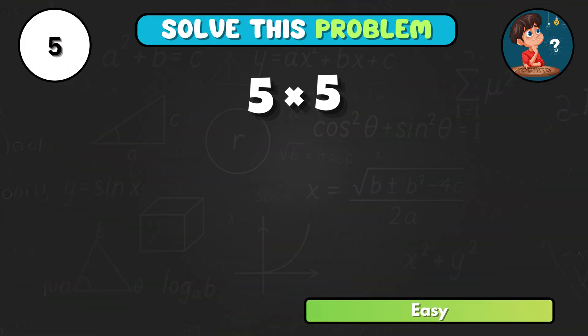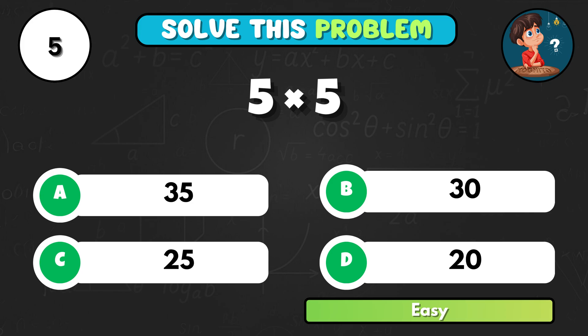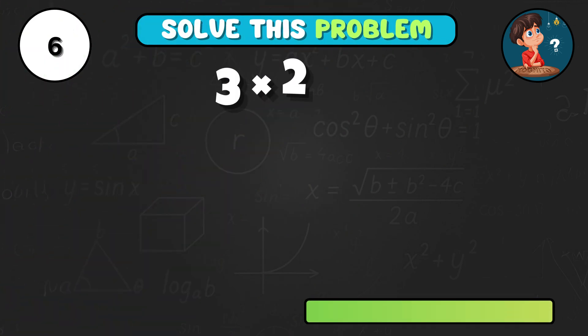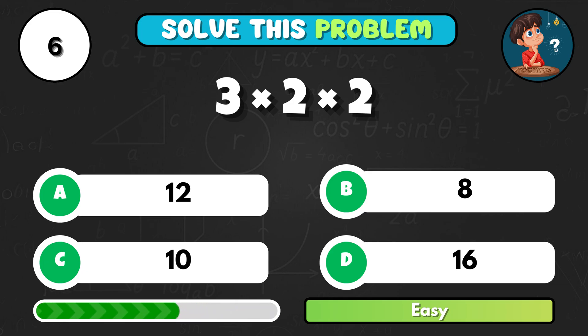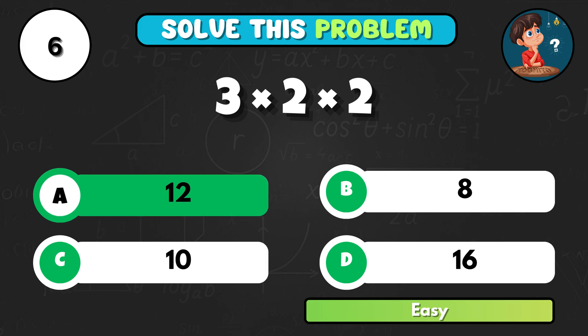Easy math. What's 5 times 5? That makes C, 25. A bit trickier. 3 times 2 times 2. What's the answer? It's A, 12.